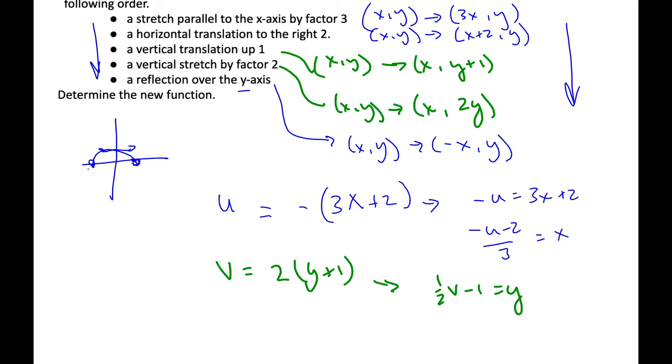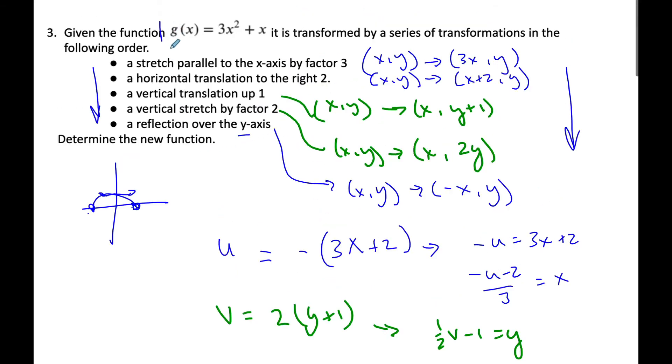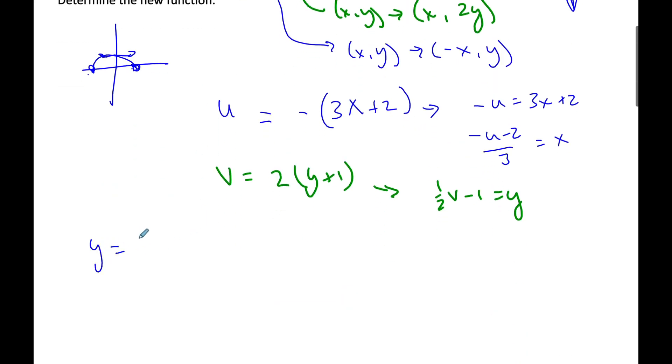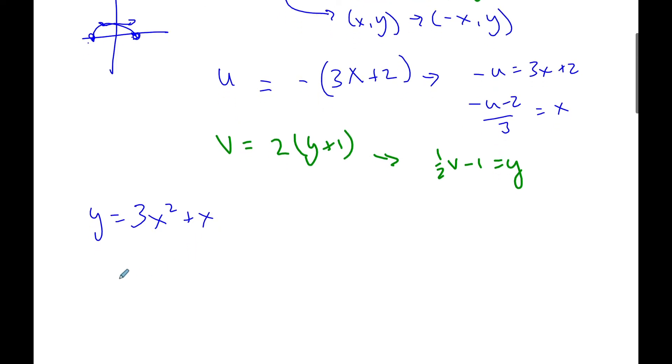And I'm going to take these x and y and plug it into this equation here. I know y is 3x squared plus x. My y, I substitute y, is equal to 1 half v minus 1 is equal to 3.